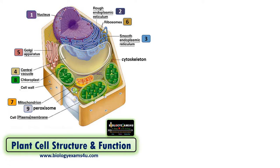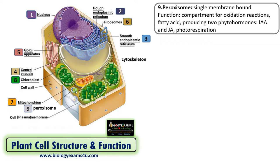The next organelle is the peroxisome. Peroxisome is a single membrane-bound organelle and a compartment for oxidation reactions where H₂O₂ (hydrogen peroxide) is generated and degraded. The enzyme involved is catalase, which converts H₂O₂ into water and oxygen. It is also a site of production of two phytohormones: IAA (indoleacetic acid), which is an auxin, and jasmonic acid, which is primarily involved in plant defense. Peroxisome is also involved in photorespiration.